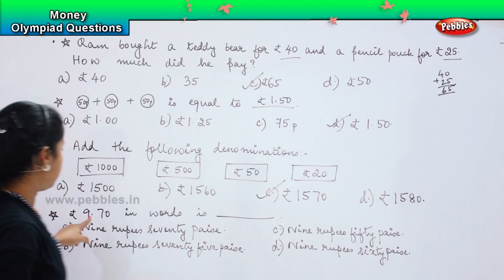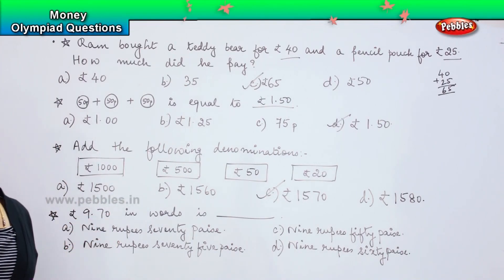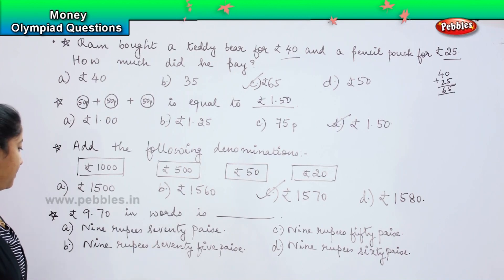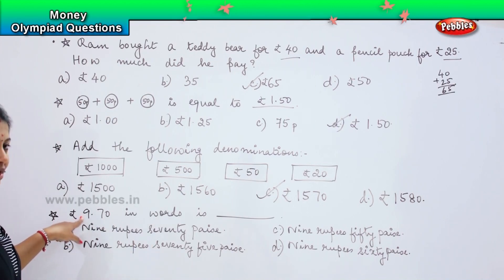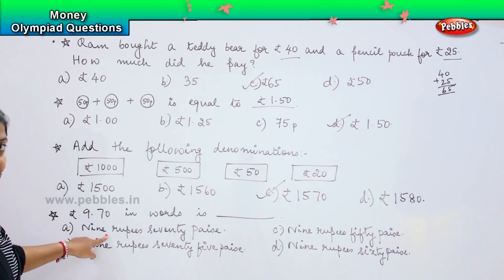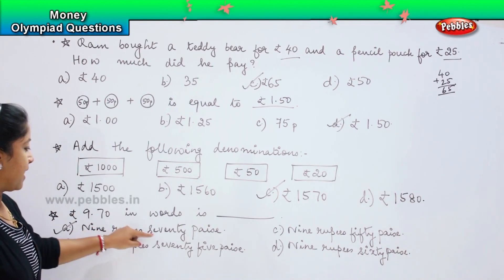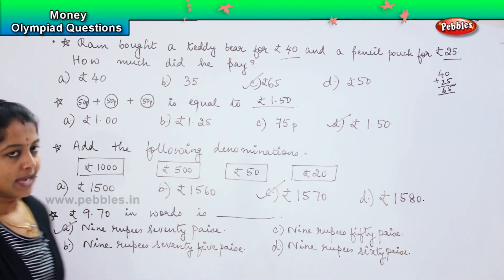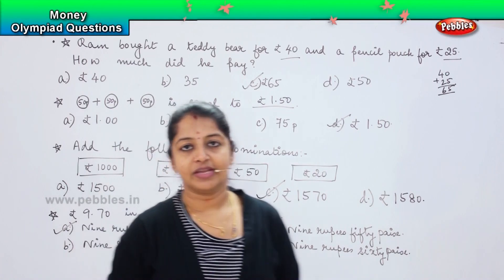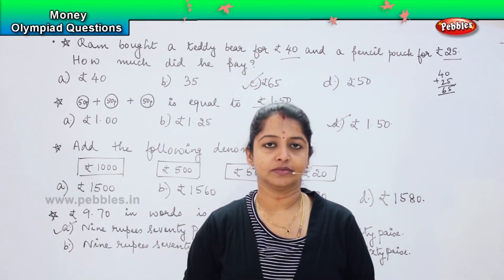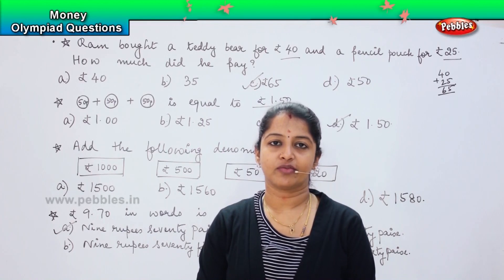You have to tell me 9.70 is equivalent to what — the number name. So 9 is 9 rupees and 70 is 70 paise. Where is that? It is Option A. So Option A, 9 rupees and 70 paise, is denoted as 9.70. Is it clear, children? Shall we move to the next level of questions?